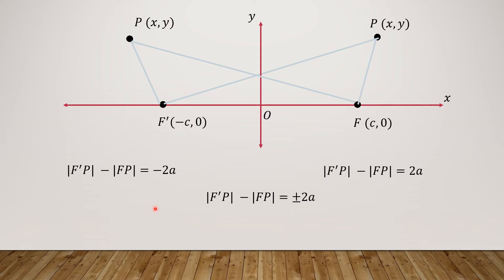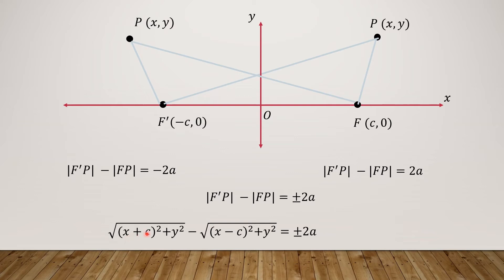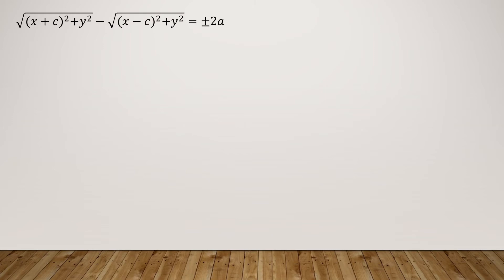Using the distance between two points formula, F'P = √[(x + c)² + y²], since x - (-c) = x + c. So we have √[(x + c)² + y²] - √[(x - c)² + y²] = ±2a. To solve this radical equation, we add √[(x - c)² + y²] to both sides, giving √[(x + c)² + y²] = ±2a + √[(x - c)² + y²].